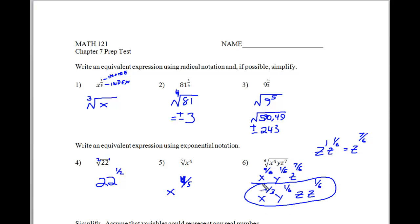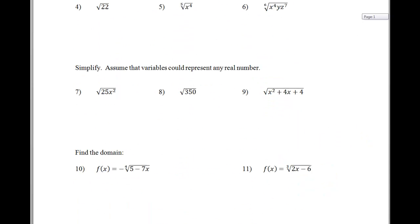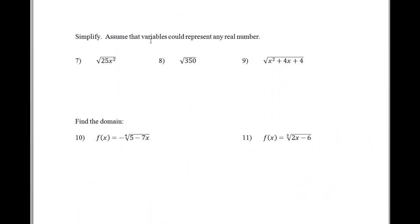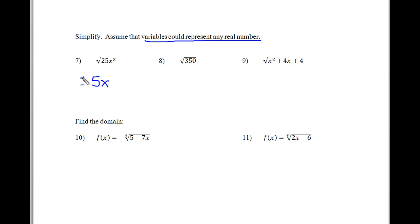Alright, so moving on — we're going to assume that variables could represent any real numbers, so we have to be careful about our plus-minus here. So in this case, the square root of 25 is 5, and the square root of x squared is x. But since variables can represent any number, we're going to have to go plus or minus for each of these problems, since they are, in fact, square roots.